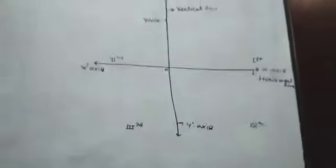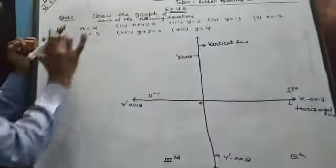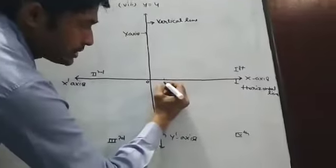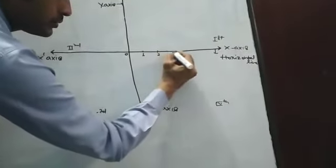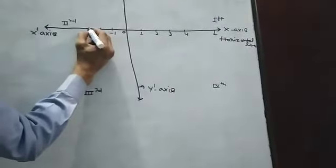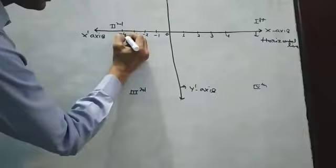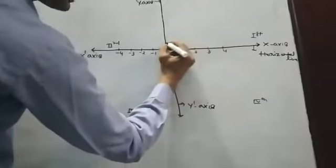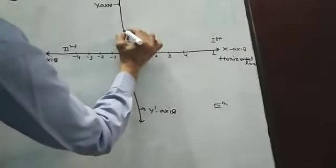So now students look, draw points. Suppose this is 1, 2, 3, 4 students. Here is minus 1, minus 2, minus 3, minus 4. Students, 1, 2, minus 1 also, students 1, minus 2, minus 3.